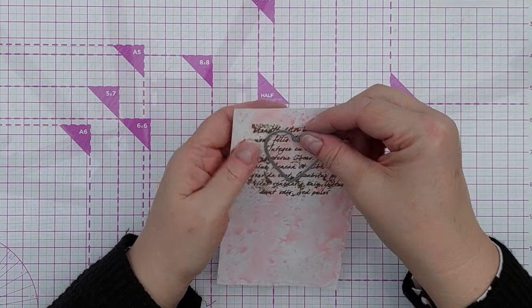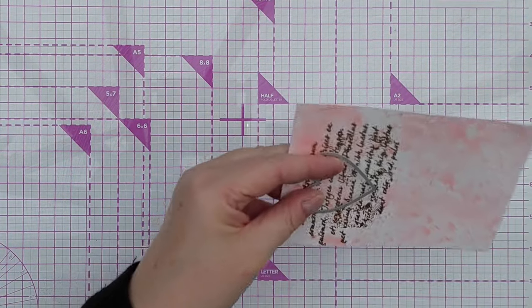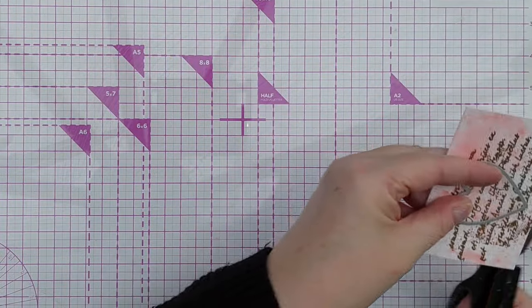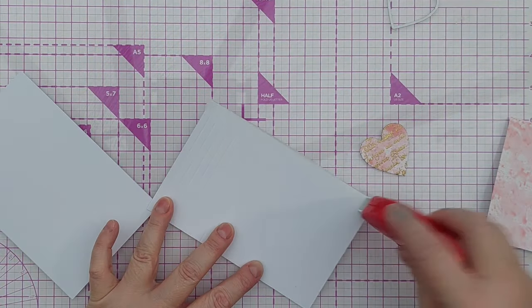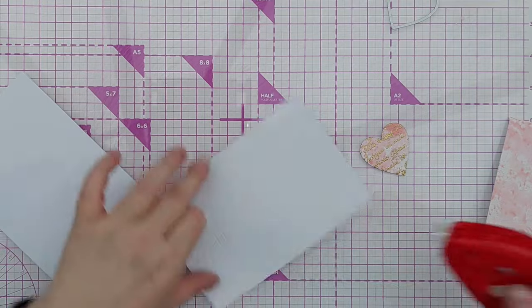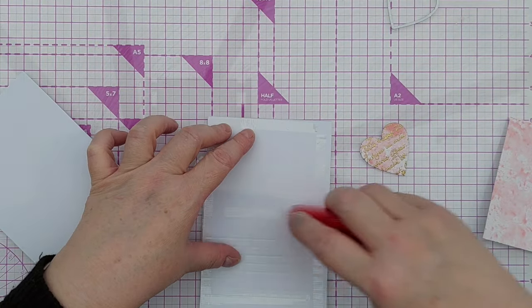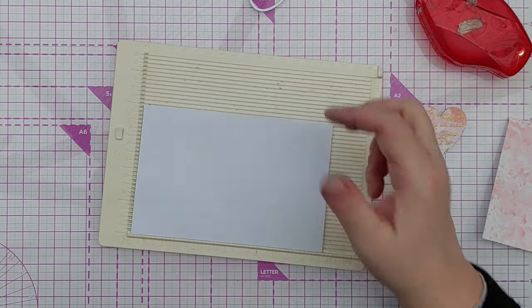Next, I cut a heart from my mixed media panel using one of my nesting heart dies. Then I added my scored panel onto the front of a 4x6 inch card blank. I didn't leave any border around the edge.